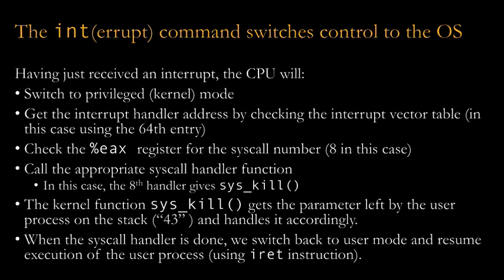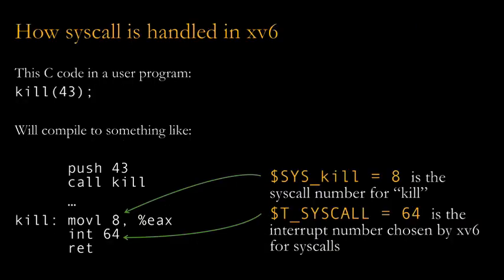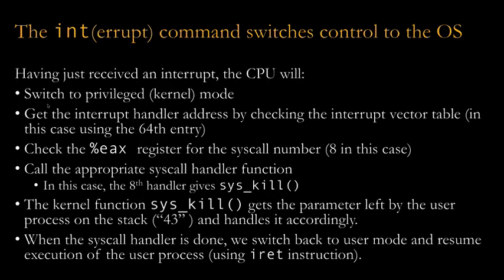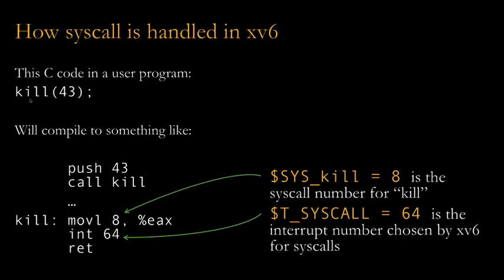We were talking about context switches and how they're handled by the XV6 operating system. We were analyzing some C code in a user program that runs the kill function, which is actually a system call. It passes one parameter, 43, telling the OS to send a kill signal to process number 43. This compiles to push and call instructions — a simple C calling convention.